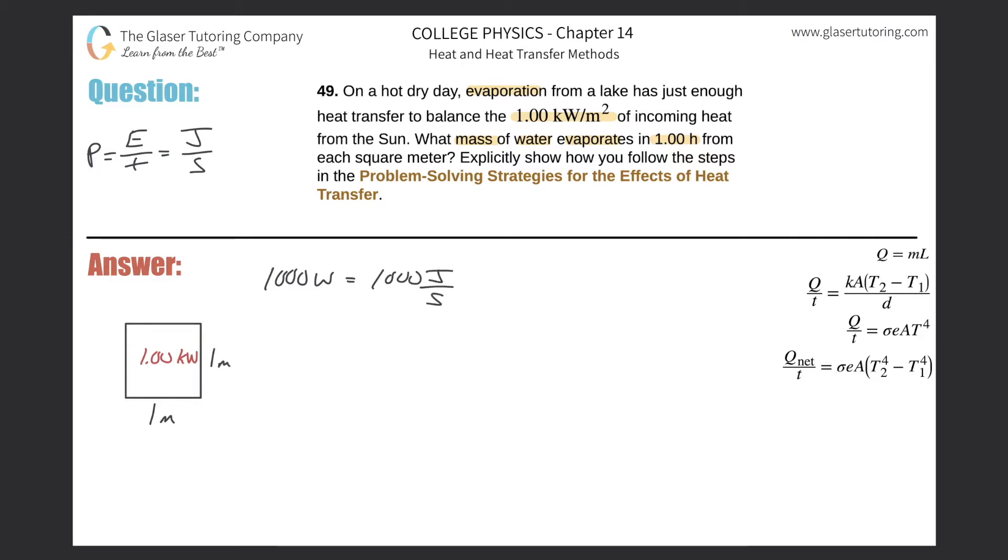So this is 1000 joules per second. This is the number of joules of energy that is approaching or being absorbed by this square meter every single second. Keep that in mind and keep that aside.